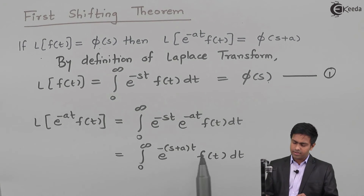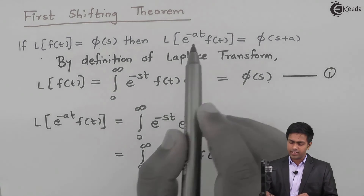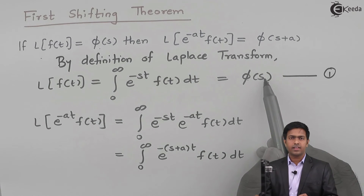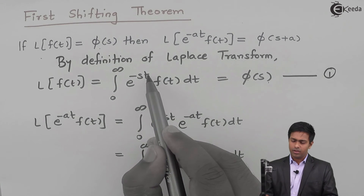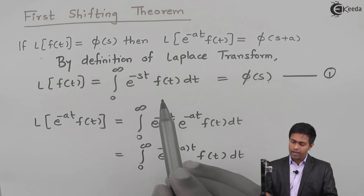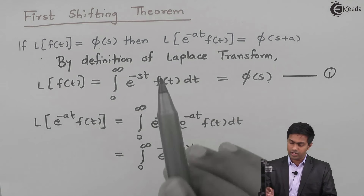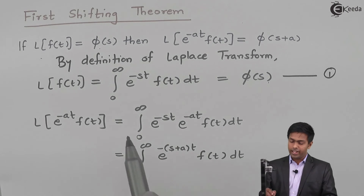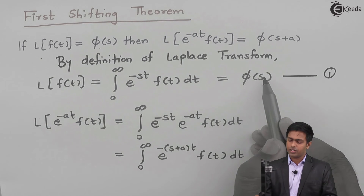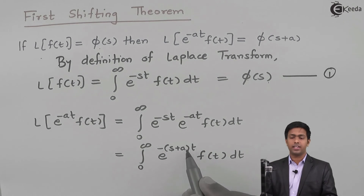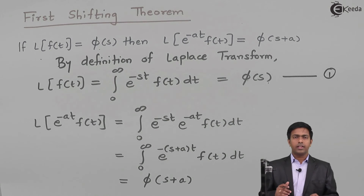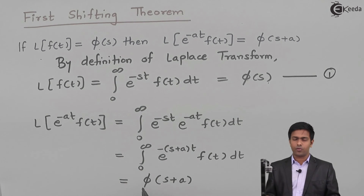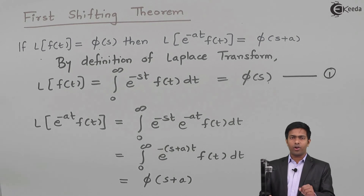Now to get the value of this, let's observe the definition once again. In the definition, the Laplace of f(t) equals F(s) because the coefficient of t in the exponent is s. Now if I compare this result with the definition, here the coefficient of t is s plus a. So when the coefficient of t is s we get F(s), and when the coefficient is s plus a we get F(s+a). Therefore, the Laplace of e raised to minus at times f(t) is equal to F(s+a).